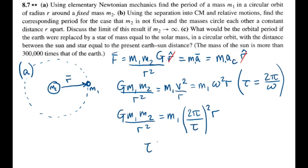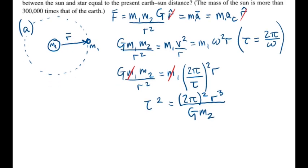So we'll be solving for tau so I'll just start rearranging here. M1 cancels and we have 2 pi squared over here r to the third over g m2. This gives us tau equals 2 pi r to the 3 halves over the square root of g m2. And that's the period of orbit.